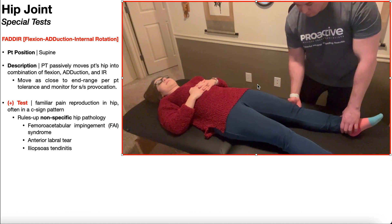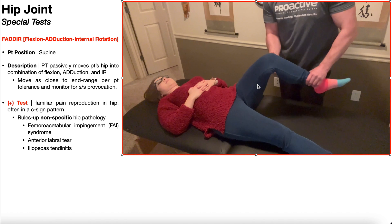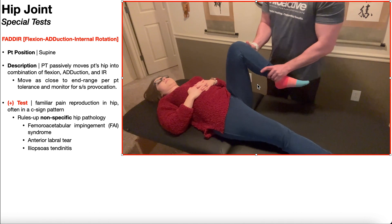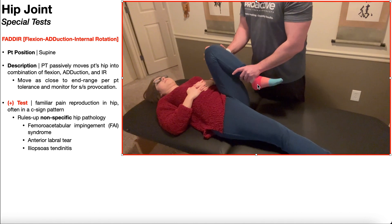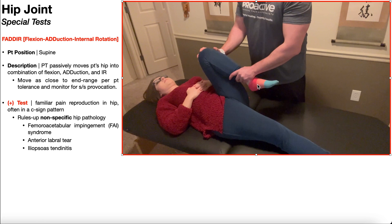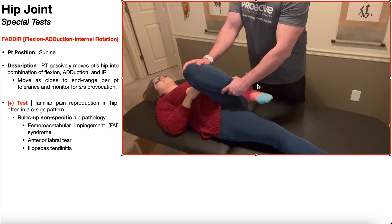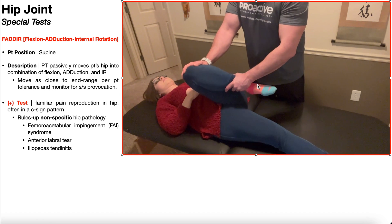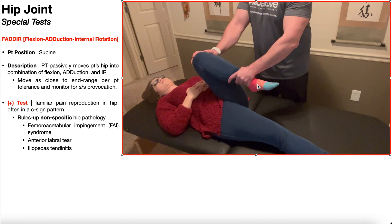To review the FADER test: take the test side hip, move it into full flexion, then move it into full adduction and full internal rotation, and monitor for symptom provocation.